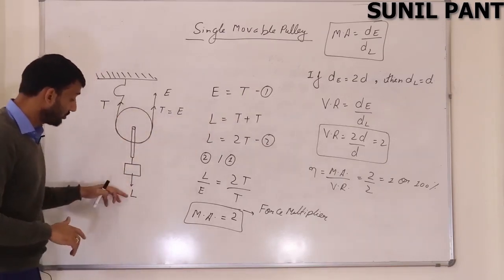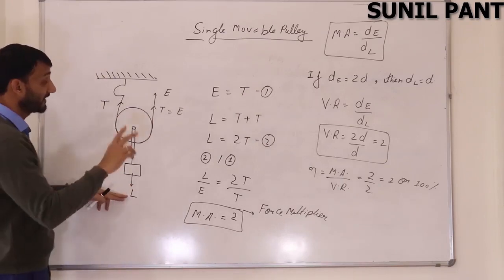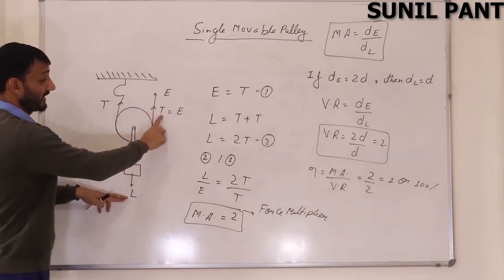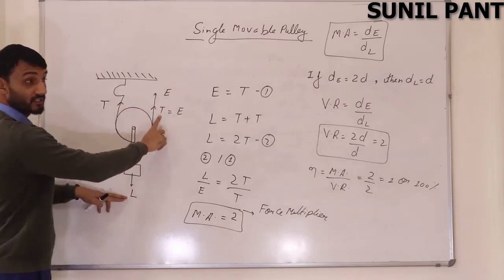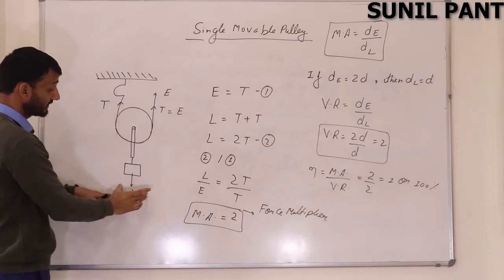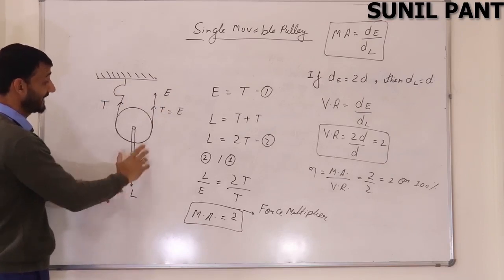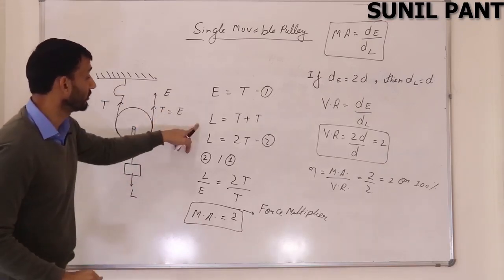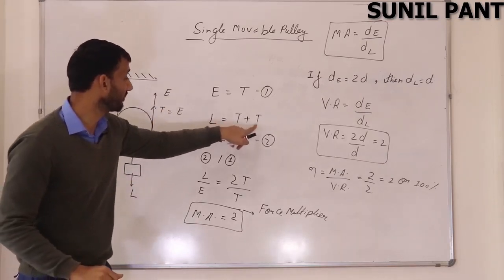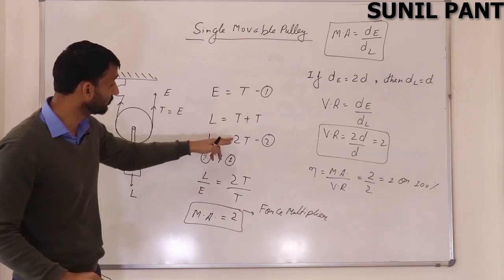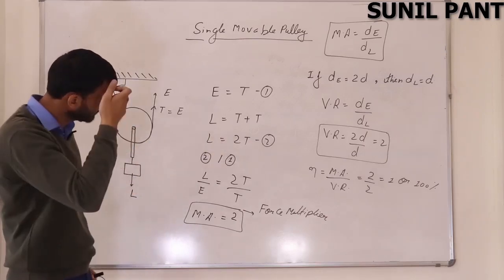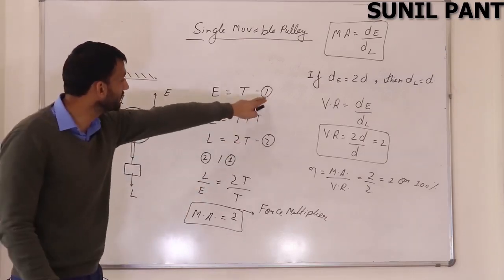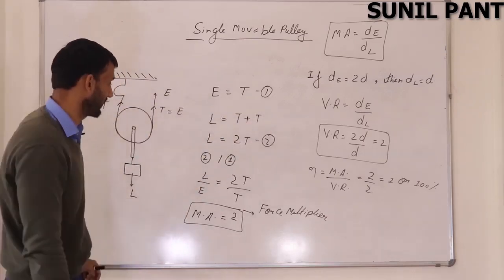This load is being lifted by two tensions in the string — one tension and another tension. It means the load is being balanced by these two tensions. So load equals tension plus tension, which means load equals two tension. This is equation number two.